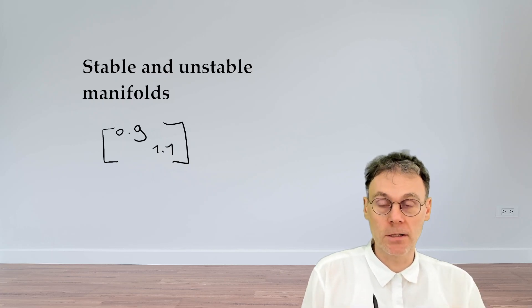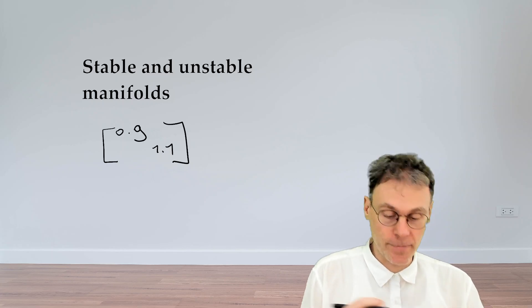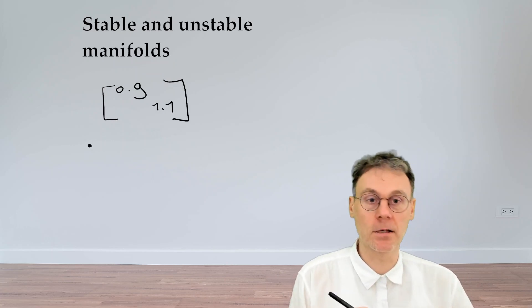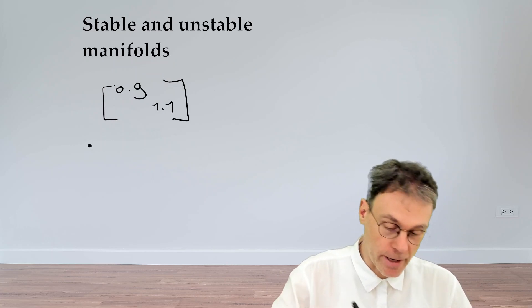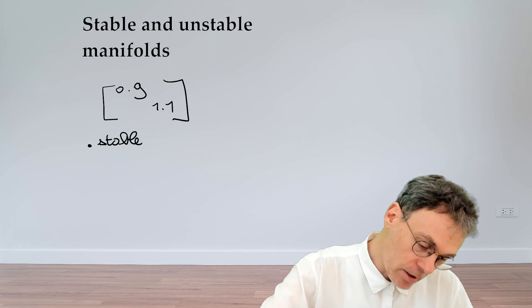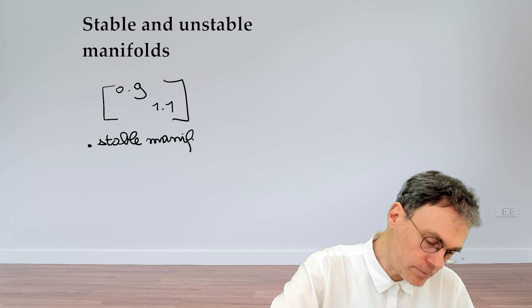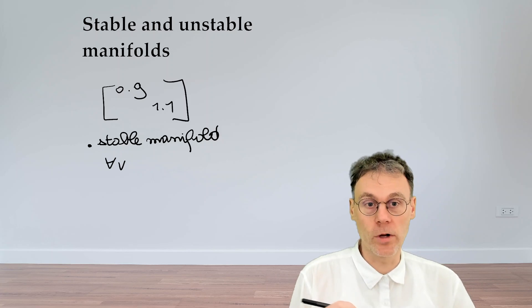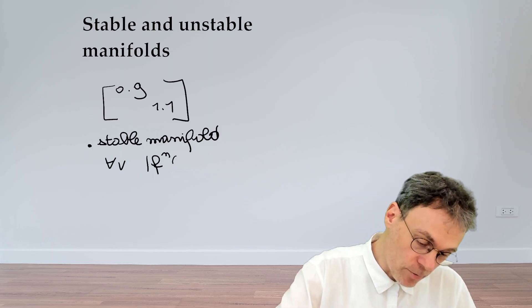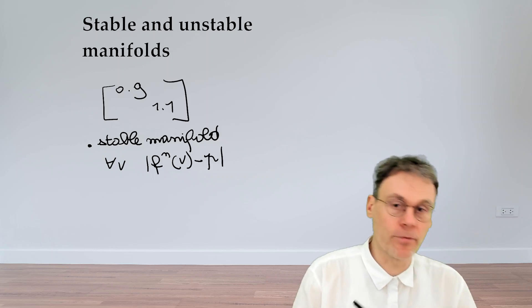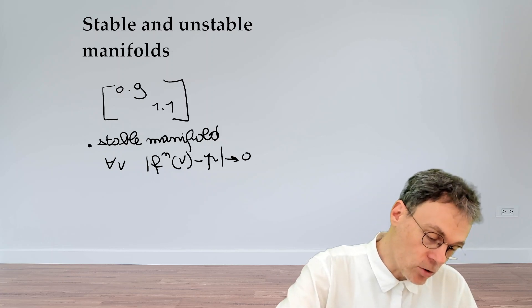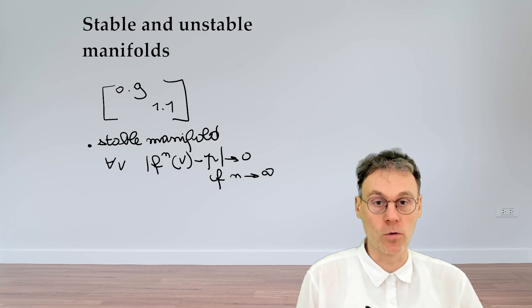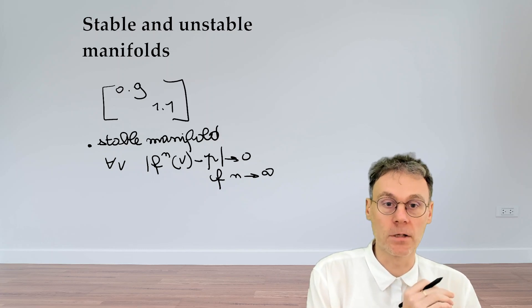Now the name of the points that the map will eventually send towards the saddle, that collection of points has a special name in general also for non-linear maps and that is called the stable manifold of the saddle. So formally you can define this as the set of points v for which if you apply the map an infinite number of times that eventually this will map towards the saddle point p so this distance will go towards zero if the amount of times you apply the map goes towards infinity. So this is the definition of a stable manifold.